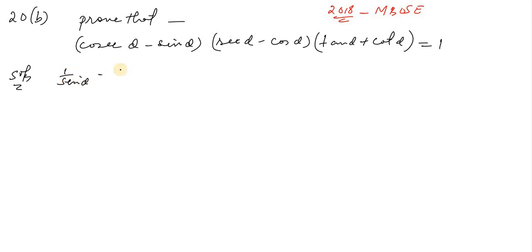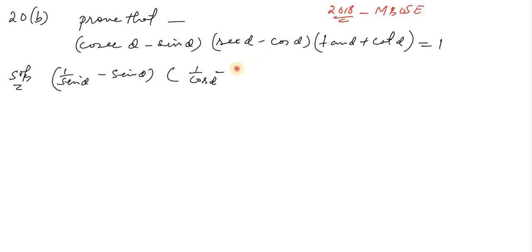So I'm taking a minus area — scientific notation — and the second part is one by cos to the second. I'm taking one by cos to the more.